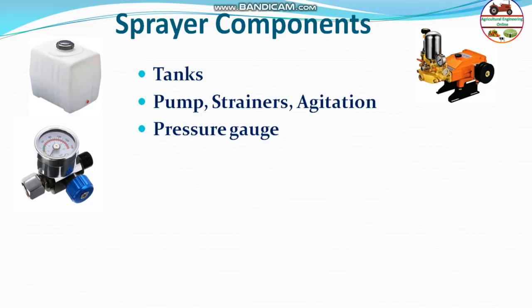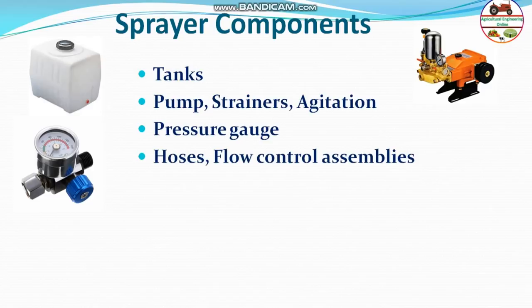Next are hoses and flow control assemblies. Flow has to be controlled — the discharge rate must be set so that the application rate can be controlled. Hoses are the pipes that carry liquid from the pump to the nozzles or delivery point. These are also integral parts of the sprayer.